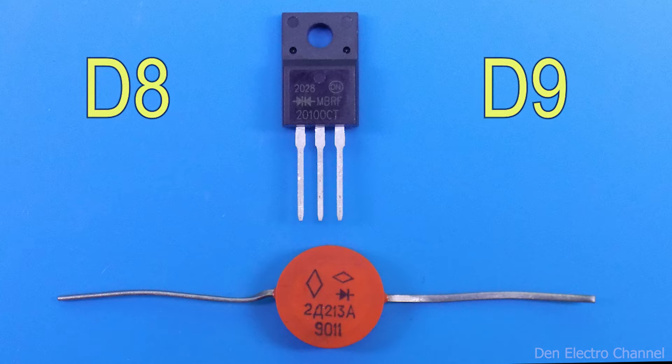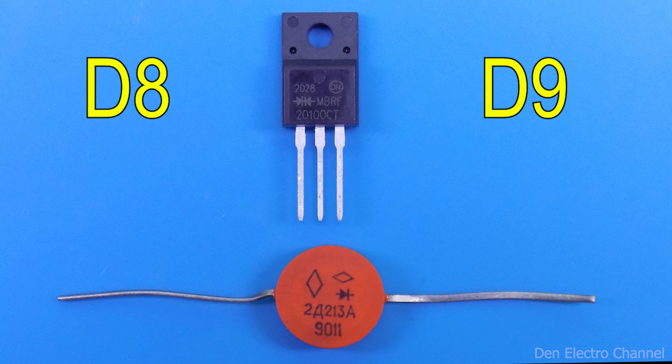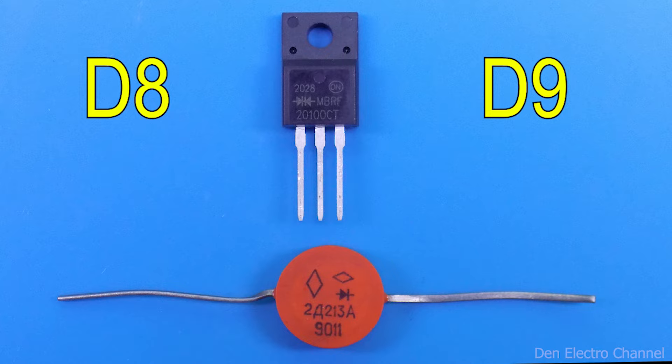Diodes D8 and D9 are 20100CT Schottky diodes. Their voltage reserve is not very large. Here it is better to use 200 volts. You can also use Soviet 2D213 diodes.